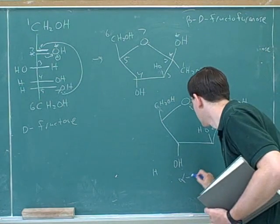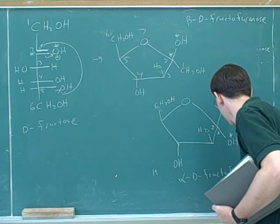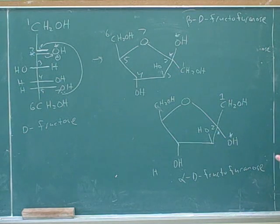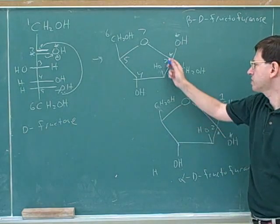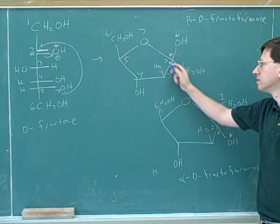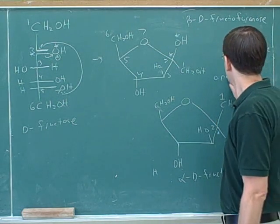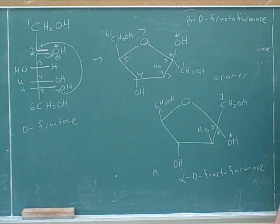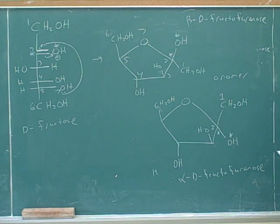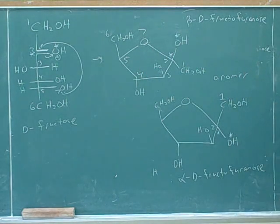And this one would be Alpha-D-fructofuranose. Incidentally, what's the relationship between these two? Epimers, or diastereomers. However, there's a special name for this type of epimer, which is anomers. The alpha and beta forms of a ring are called anomers of each other — that's the name specifically for the alpha and beta forms of the same sugar. So anomers are epimers, which are diastereomers. Epimers are a type of diastereomer, and anomers are a type of epimer.